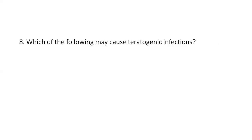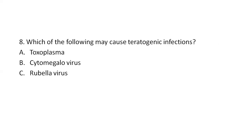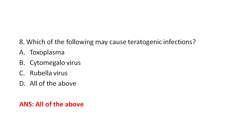Next question: Which of the following may cause teratogenic infections? Option A, Toxoplasma. Option B, Cytomegalovirus. Option C, Rubella virus. Option D, all of the above. The right answer is Option D, all of the above. Teratogenic infections cause congenital disorders. These microorganisms cross the placenta and infect the fetus. The short form is TORCH complex: T = Toxoplasma gondii, O = Other agents such as Treponema pallidum (syphilis), R = Rubella virus, C = Cytomegalovirus, H = Herpes simplex virus.